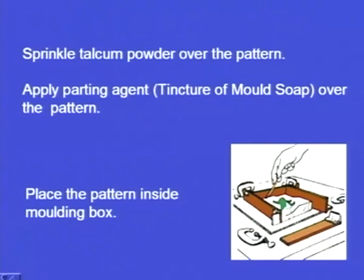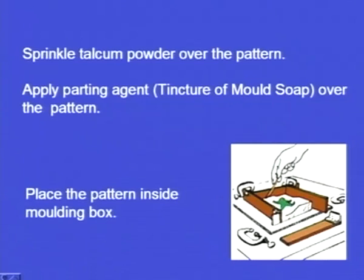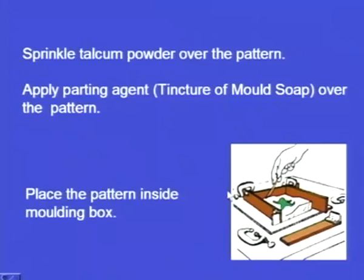In most cases we have to split the pattern, the way we do in conventional sand casting — one half moulded in the drag, the other half in the cope. However, if we split the pattern, alignment can become a problem and the casting will be defective. So if it is difficult to make a split pattern, instead we take a bed of clay, press the pattern into it so that half of the pattern goes inside the clay, and then fill the remaining surface with plaster of Paris.